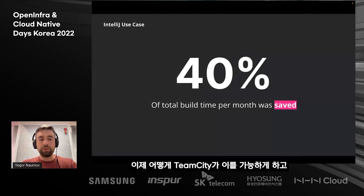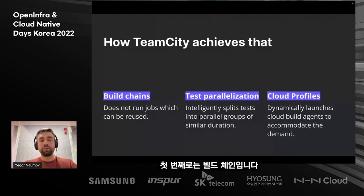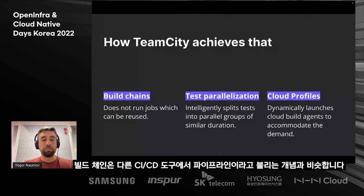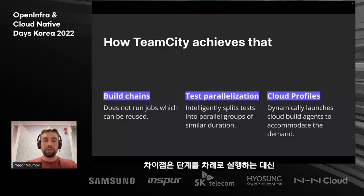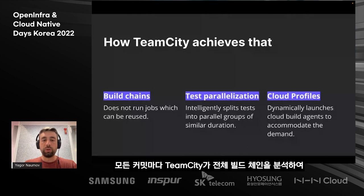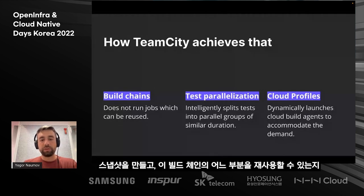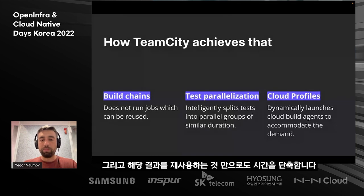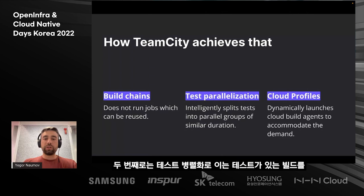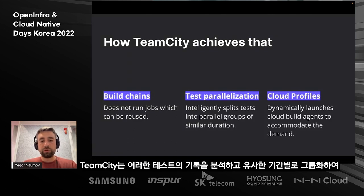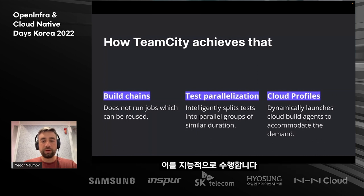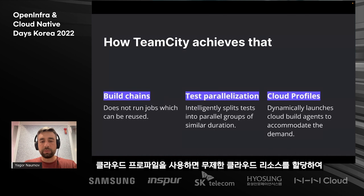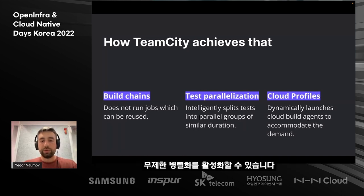Let's see how TeamCity achieves that. There are essentially three key aspects. First is build chains — similar to what is often called pipelines in other CI/CD tools. Instead of running stages one after another on every commit, TeamCity analyzes the whole build chain, makes a snapshot, and decides which parts can be reused rather than rebuilt. Second, test parallelization splits builds with tests into multiple parallel stages, grouping them by similar duration based on historical analysis. Third, cloud profiles make it possible to allocate unlimited cloud resources to enable that unlimited parallelization.